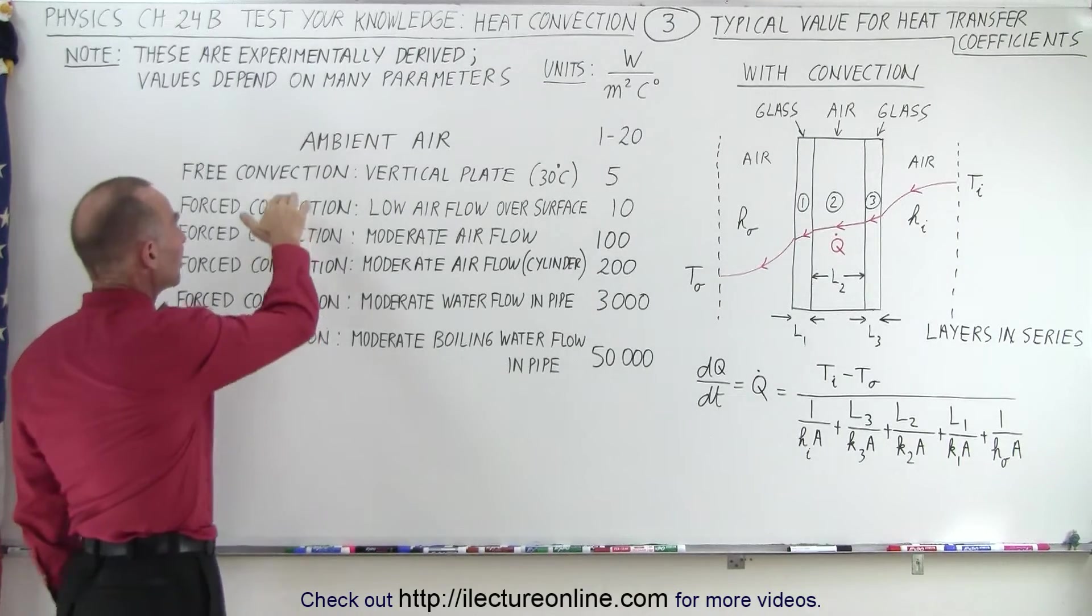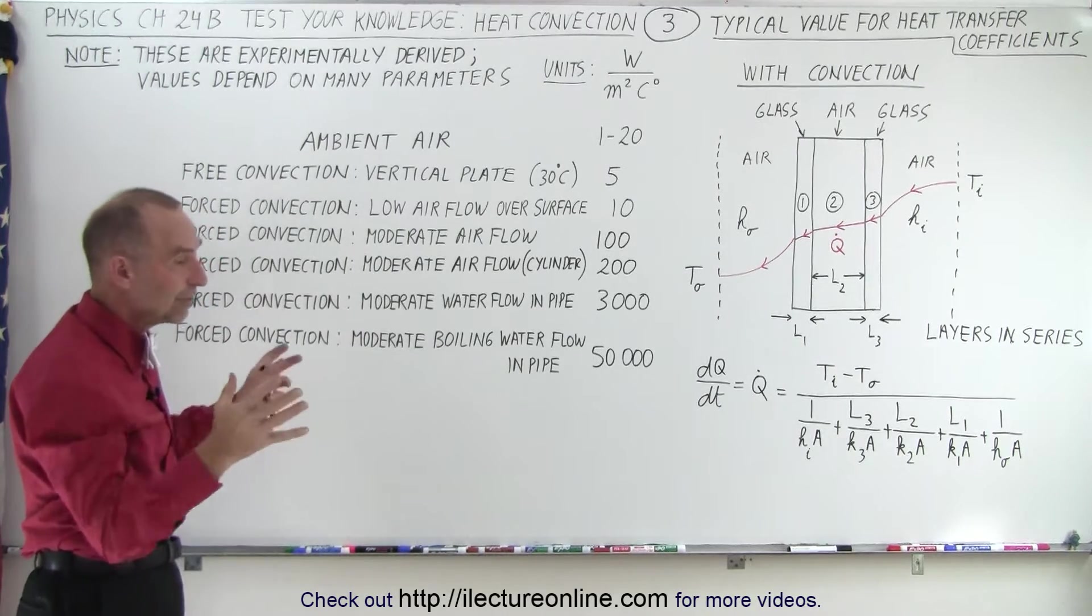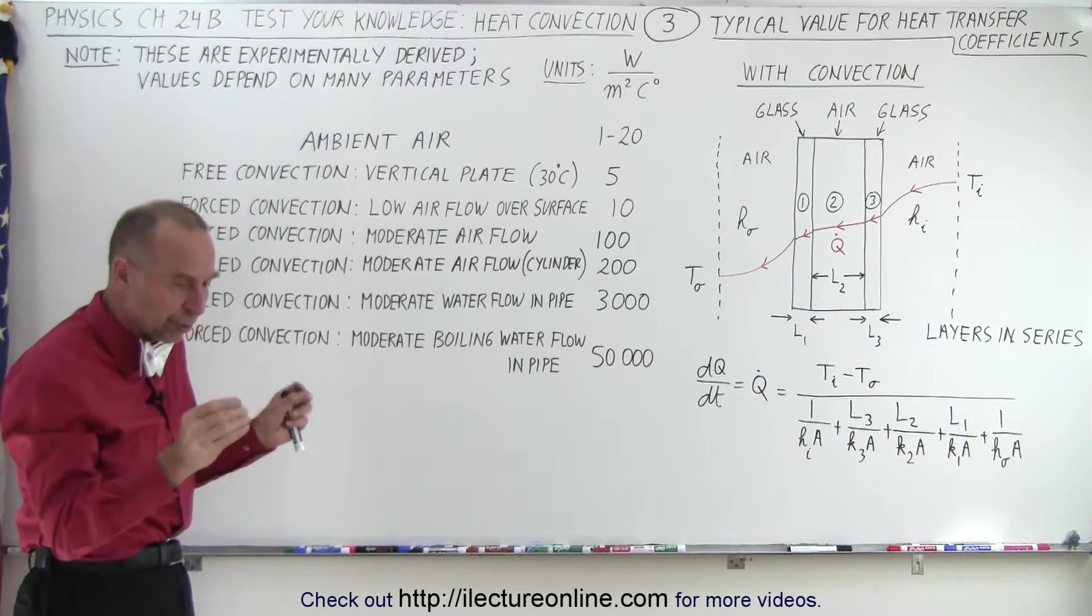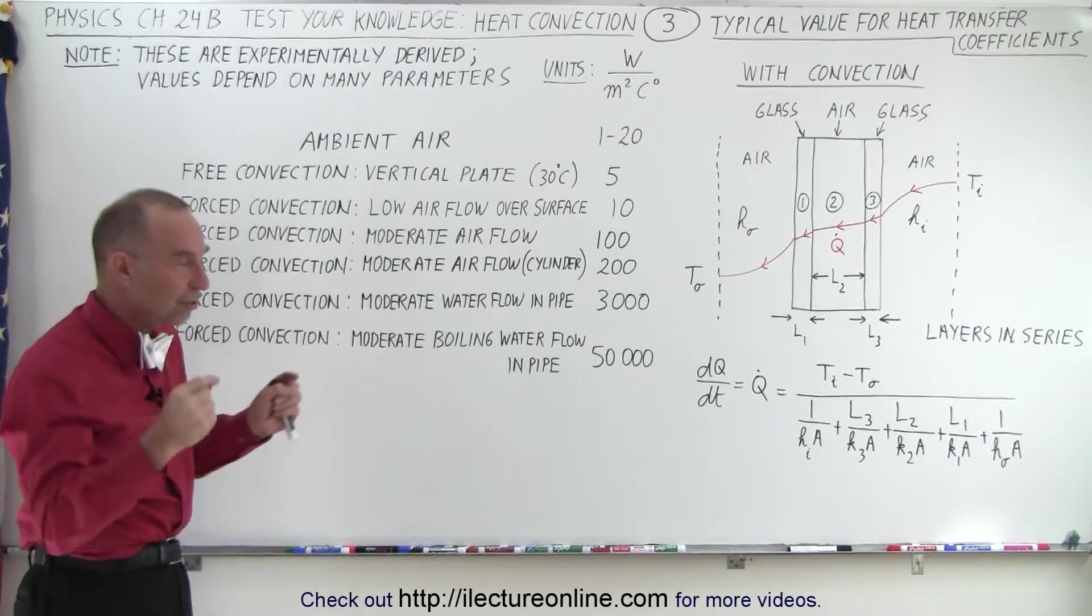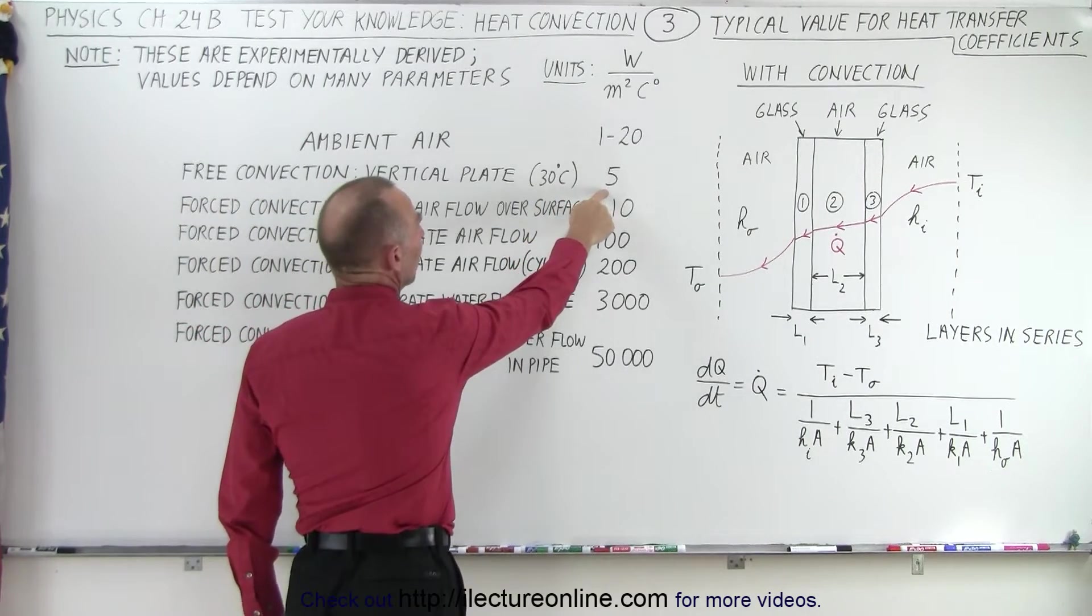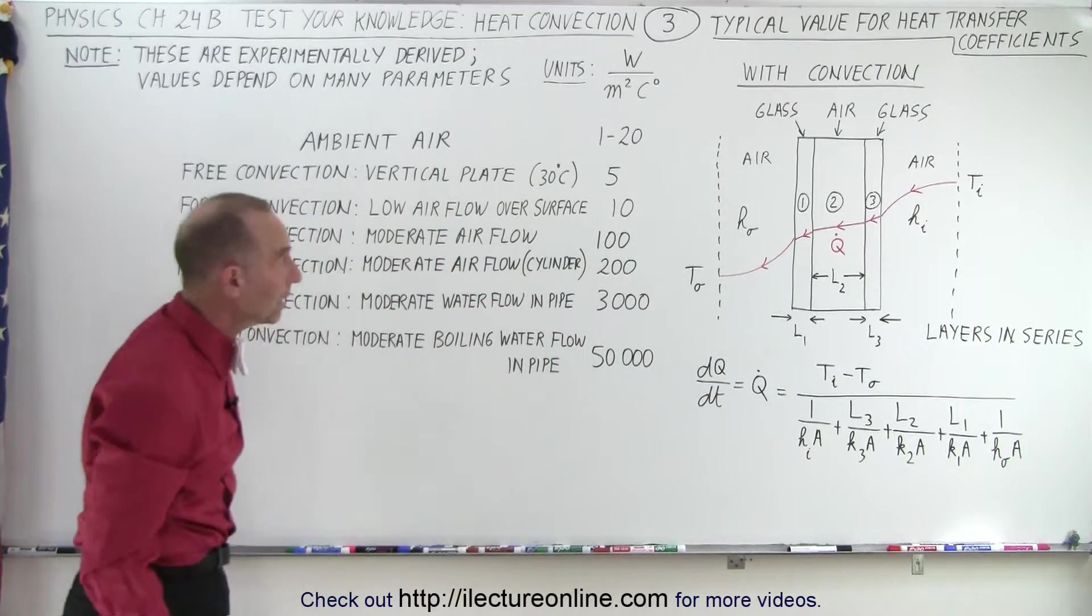Now if we have free convection, what's free convection mean? Well, free convection means that there's no forced air. So that is basically the movement of heat due to the thermal action of the molecules in the gas. And if the temperature is 30 degrees centigrade, the number is around 5. Notice that 5 definitely falls well within the 1 to 20 range.